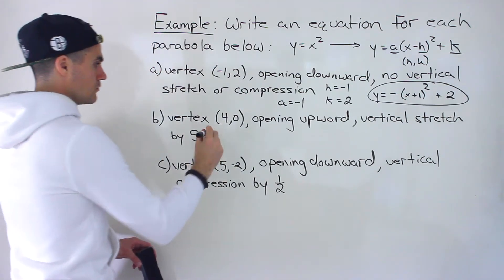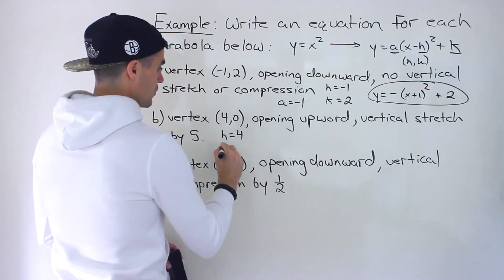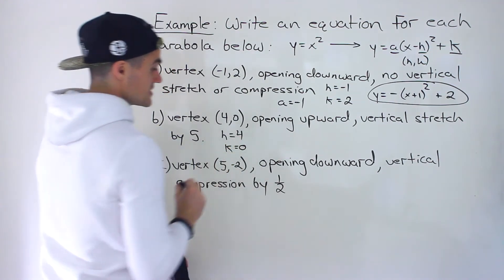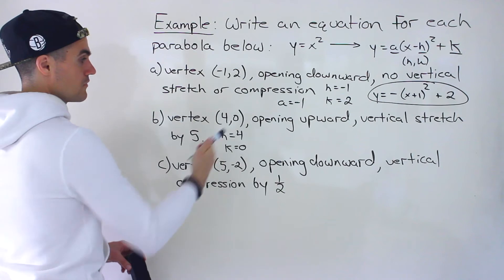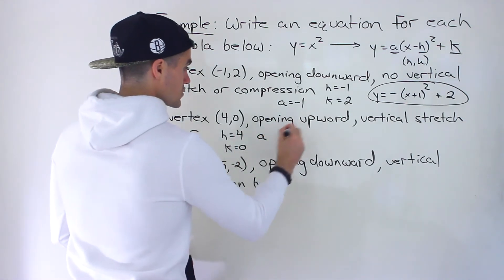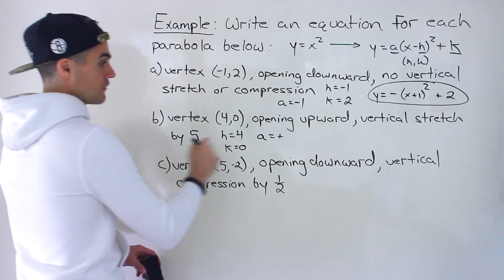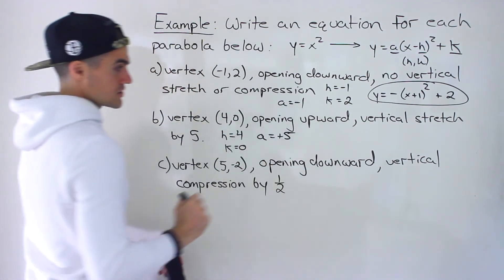So moving on to part B using the same thing, we got an H value of four. We got a K value in this case of zero. The y value of the vertex is zero. And then the A value we're told is opening upwards. So we know the A value is going to be positive. There's a vertical stretch by five. So the A value is just five.